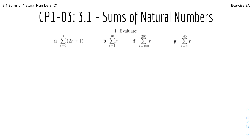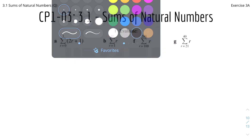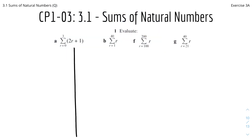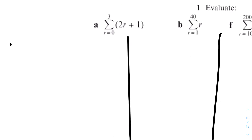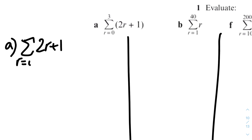We have columns a, b, f, and g, and I'll split into four different columns: a, b, f, g. So for part a, we'd find the sum of two r plus one from r equals zero to r equals three.